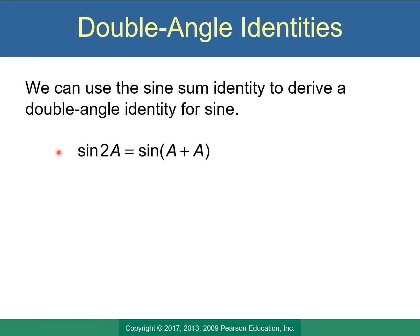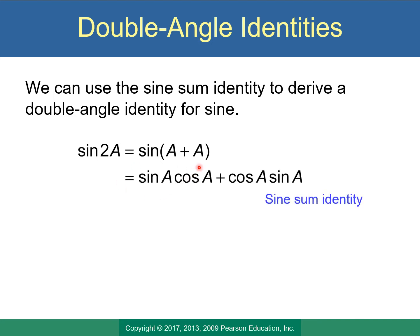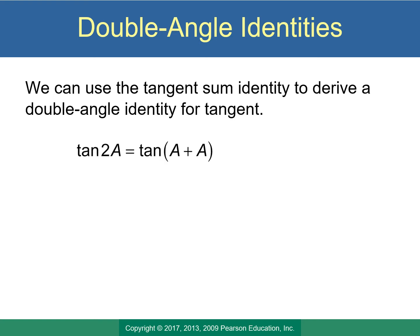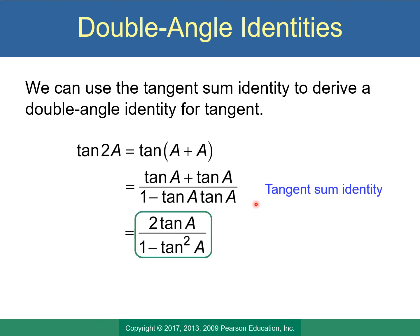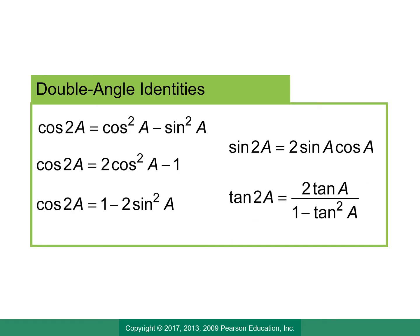Now we'll derive the sine double angle formula. Sine of 2a — think of this as a + a, then use the sine sum identity. Everywhere we had B we just replace it with a, then simplify, and we get sin(2a) = 2·sin(a)·cos(a). For tangent, the same approach: tangent of 2a, break it into a + a, use the tangent sum identity, replace every B with a, simplify, and we get our tangent of 2a formula.